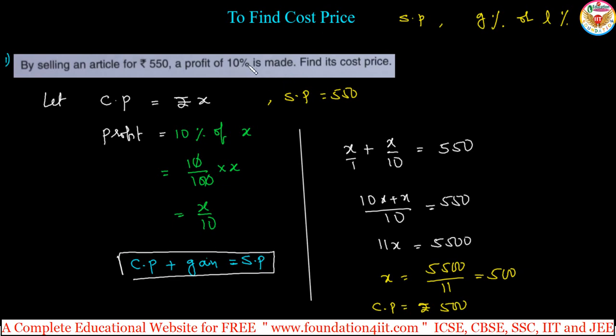So to get a 10 percent profit, if the selling price of the article is ₹550, the cost price is ₹500. This is the algebraic method — it is very clear and easy to solve. See a few more problems to get more ideas.